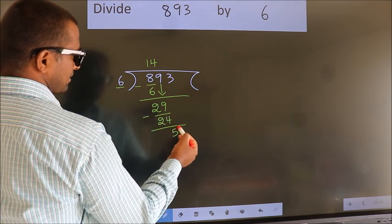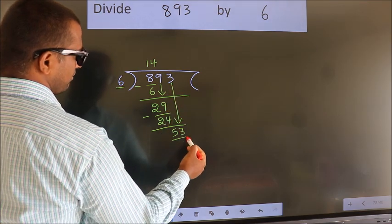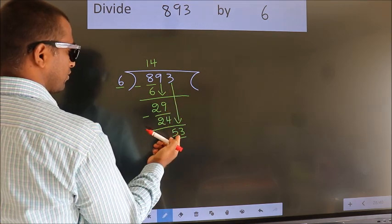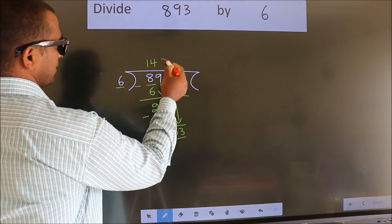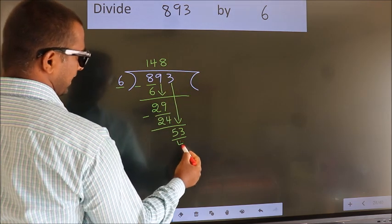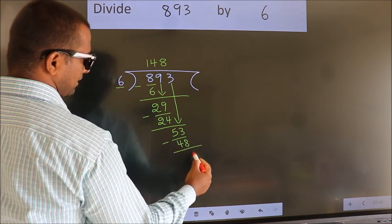After this, bring down the next number. So 3 down. So 53. A number close to 53 in the 6 table is 6 times 8 is 48. Now we subtract. We get 5.